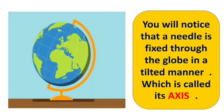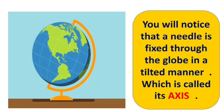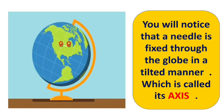This picture shows you what the earth looks like. This is a globe. You will notice that a needle is fixed through the globe in a tilted manner, which is called its axis. You can only see half of the globe at one time; however, you can turn the globe around to see the other half.